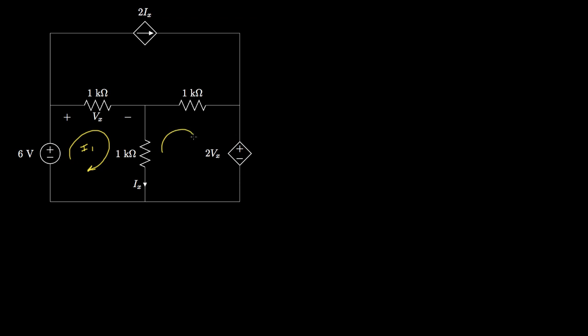To do that, we'll begin by defining and labeling the mesh currents in this circuit. We'll take this loop and define that as mesh current I1, then take this loop and call it I2, and then take this loop and call that mesh current I3.